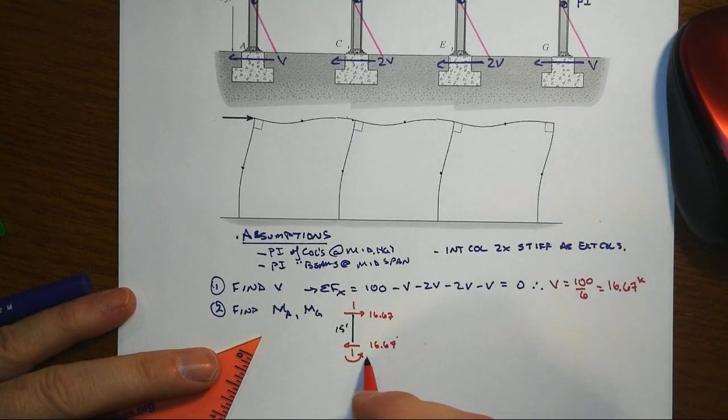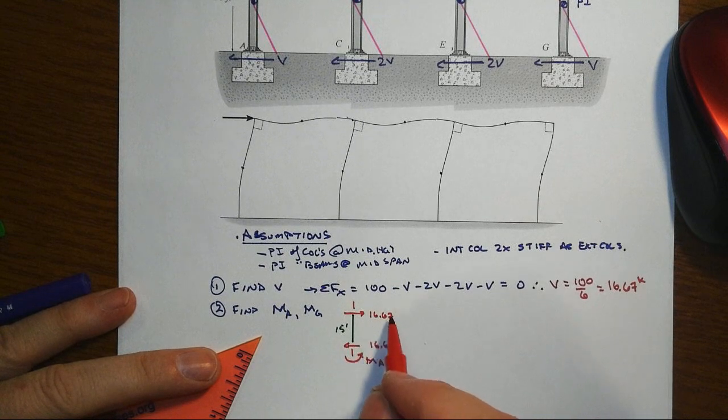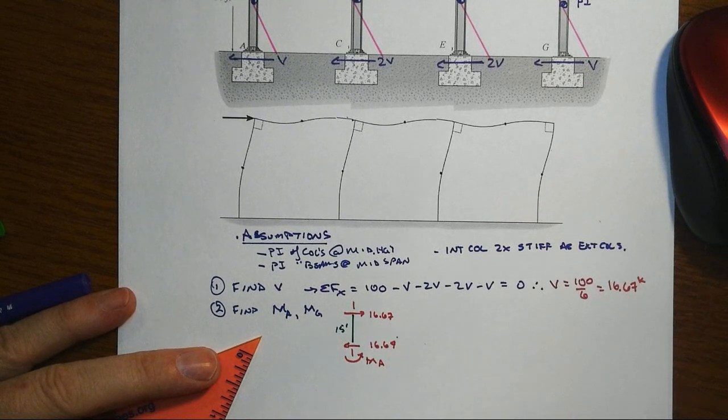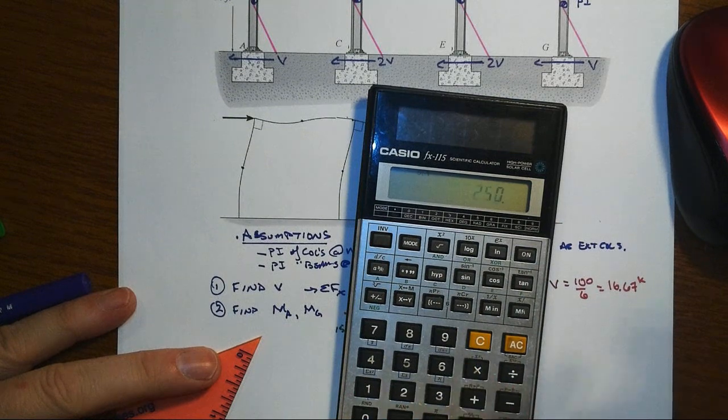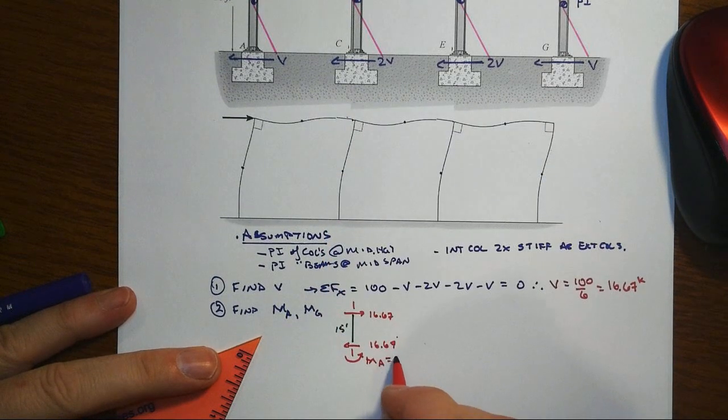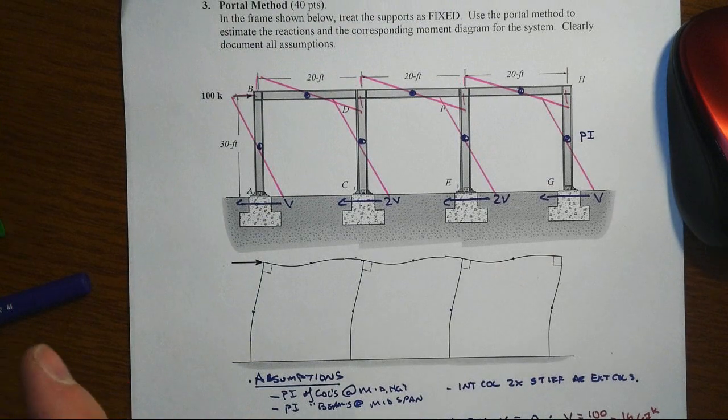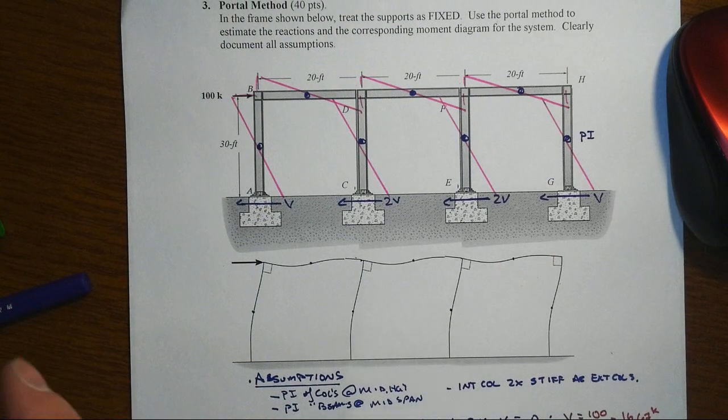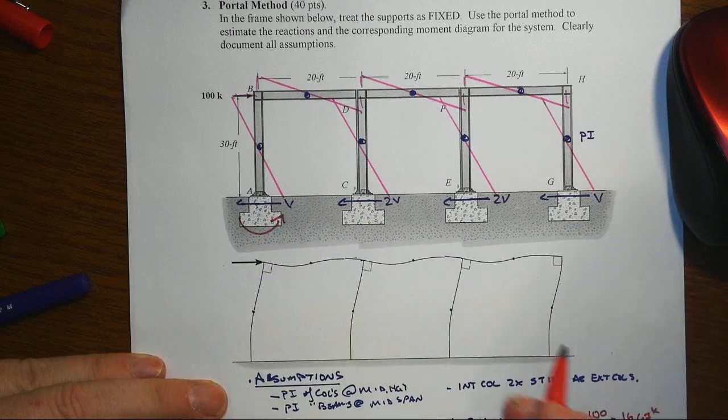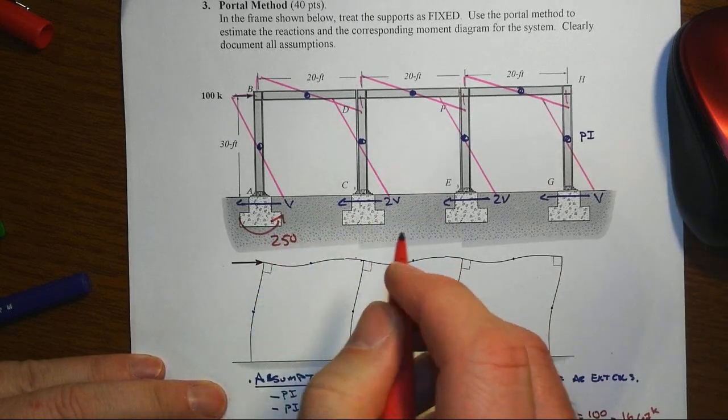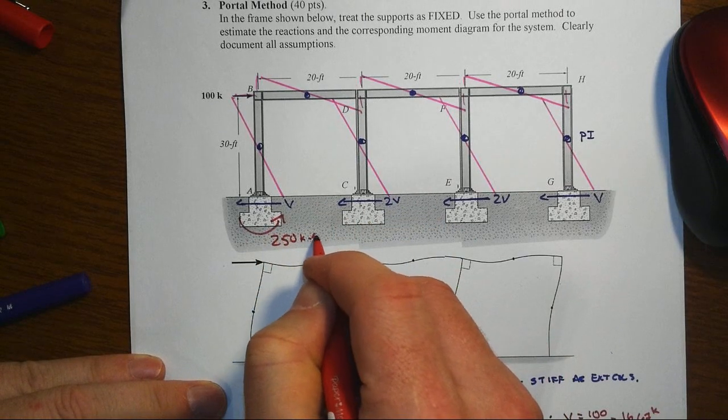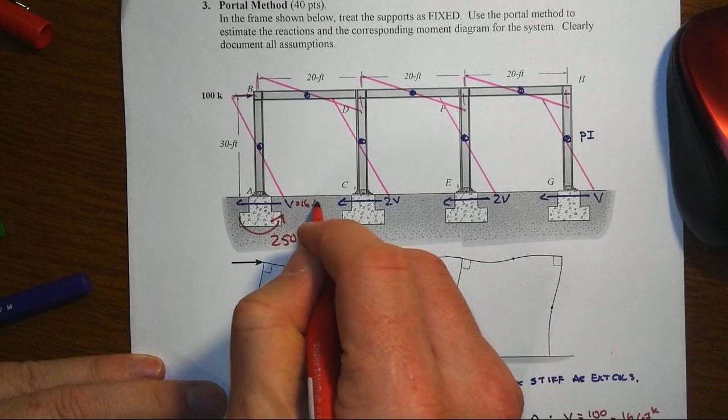and so 16.67 times our 15 feet would be 250. So I think we just found most of our reactions, not all of them, but most of them. Because that has to be our moment that we just found, that's 250 kip foot, that was 16.67.